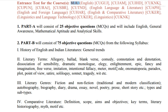Further literary terms covered include Dissociation of Sensibility, Dramatic Monologue, Elegy, Enlightenment, Epic, Fancy and Imagination, Free Verse, Imitation, Intentional Fallacy, Metre, and Motive.